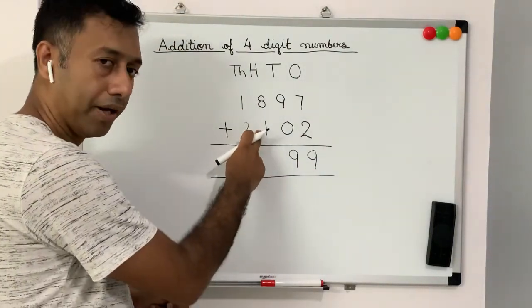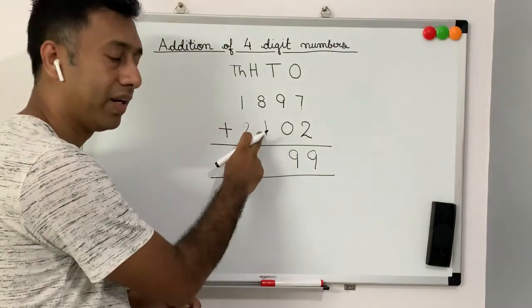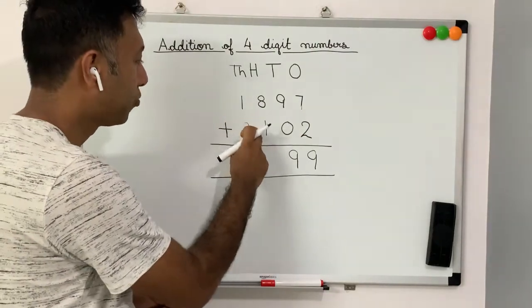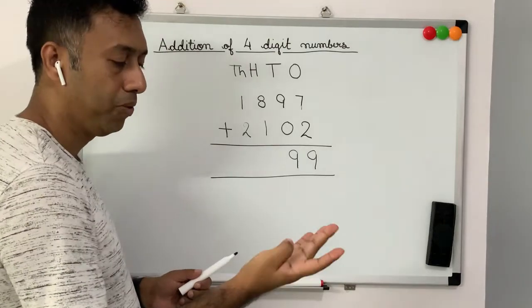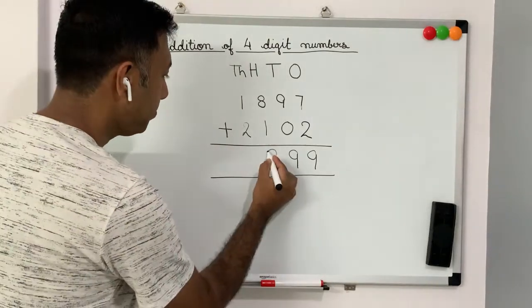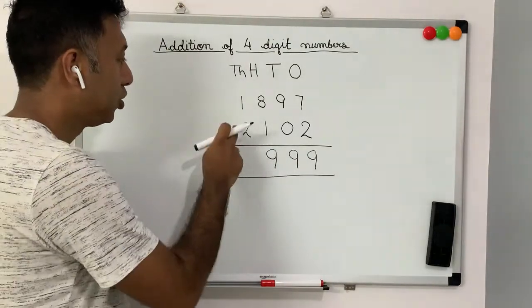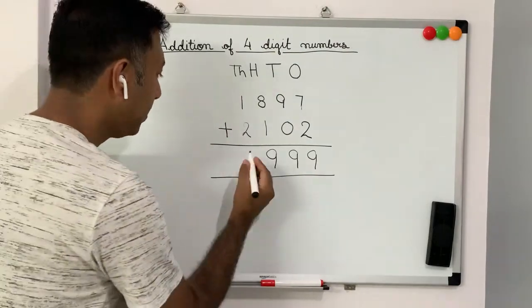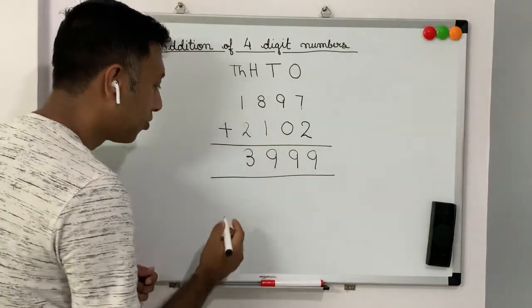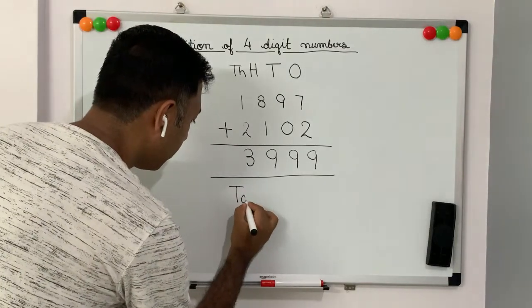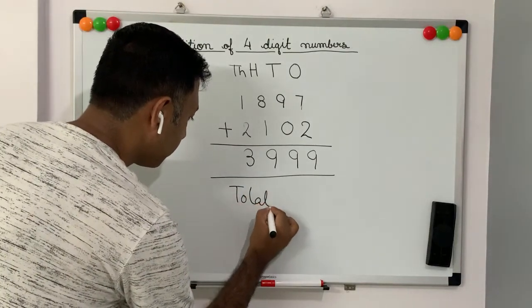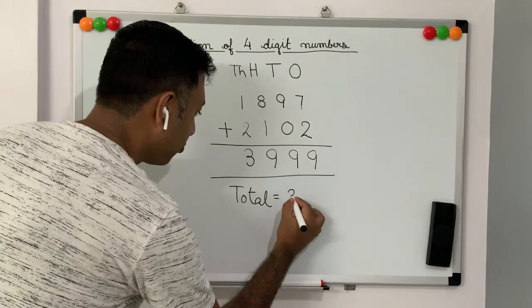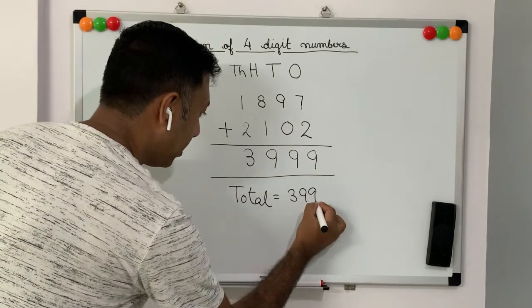8 plus 1. Again, 8 is a bigger digit, 1 is a smaller digit. So, 8 plus 1 is also equal to 9. And, 2 plus 1, so 2 plus 1 is 3. So, let's write the total equal to 3, 9, 9, 9.